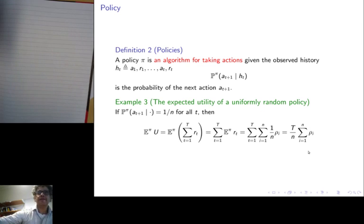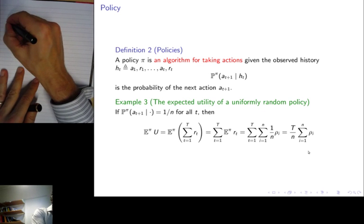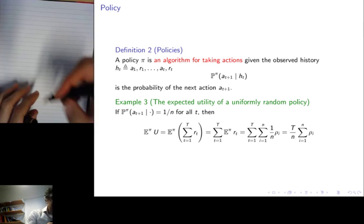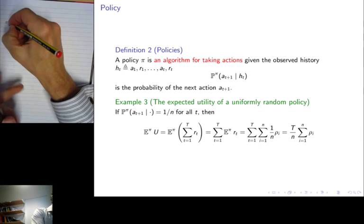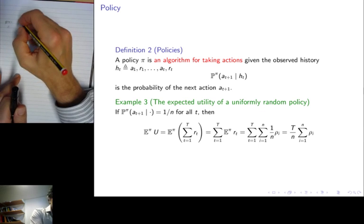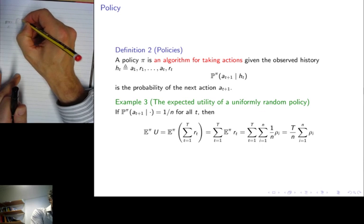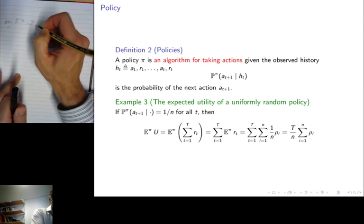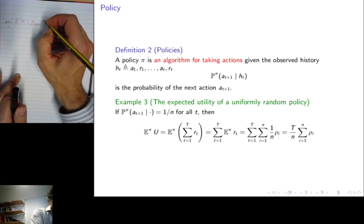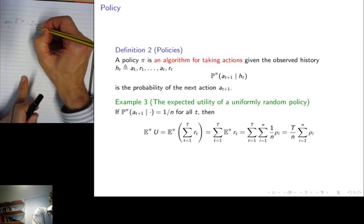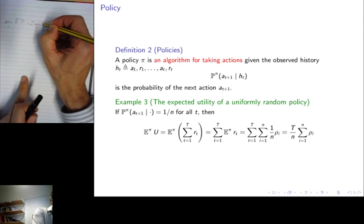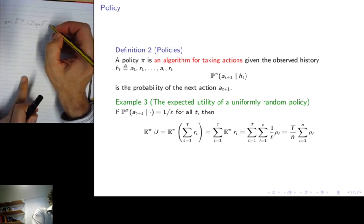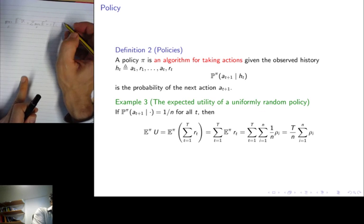Of course, that means that we're not doing as well as we could. So the maximum we can get here is basically, what is the maximum? Well, if you look at all possible policies, then the maximum we can get is max over π.